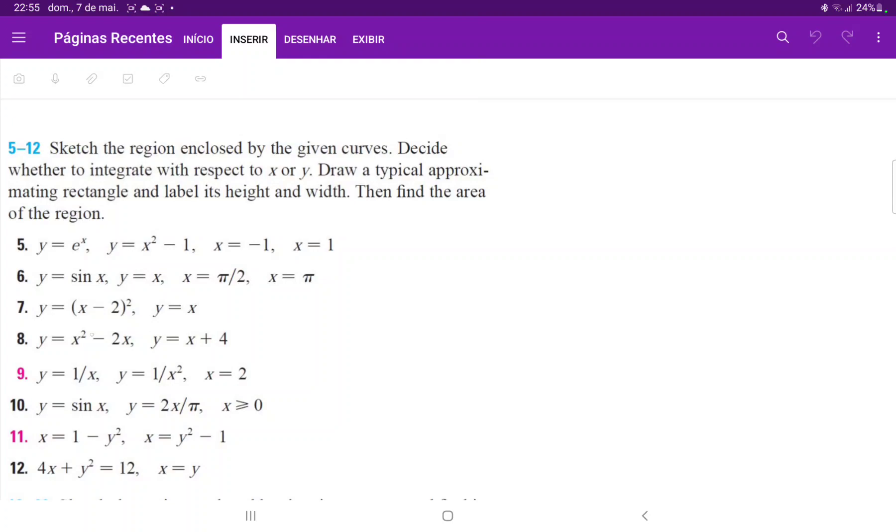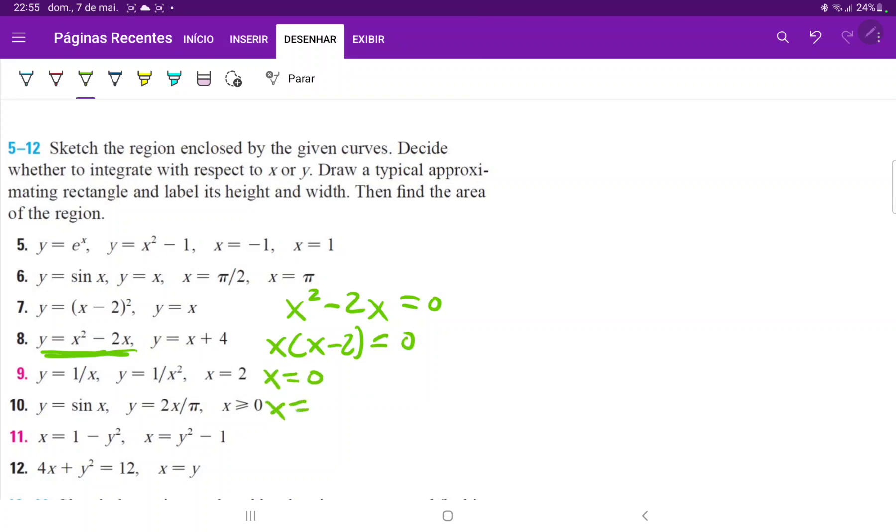So let's draw this out. For the first curve, this one over here, there are multiple ways to draw it out. I will draw it by factoring, finding the roots, and then kind of fitting a curve through it. So I will factor this equation, x squared minus 2x is equal to 0, so then I have x times x minus 2 is equal to 0.